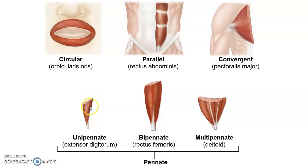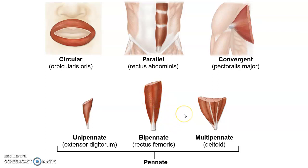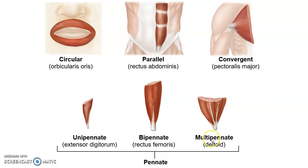The three pinnate subtypes are: unipinnate, where the tendon is along one side and the muscle fascicles insert into it on that one side; bipinnate, where the tendon runs down the middle and fascicles insert on either side, like a feather; and multipinnate, where the tendon branches into different branches and each branch has fascicles inserting into it. So in summary: circular, parallel, convergent, and pinnate — with pinnate having unipinnate, bipinnate, and multipinnate.